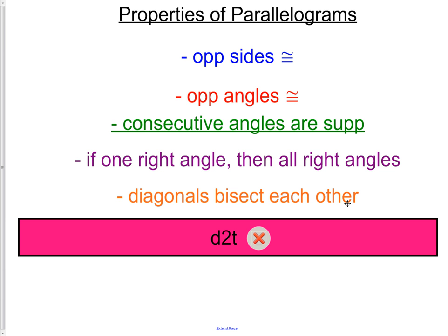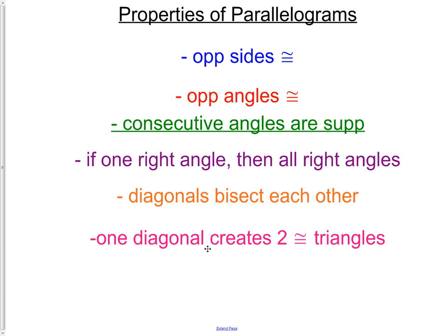And lastly, one diagonal. So if you draw in one of your diagonals, you actually are creating two congruent triangles. These last two properties, we will be doing some homework and some exercises to understand how those two actually work, but make sure you pay close attention to those because those are the properties that are often missed when people see questions relating to parallelograms.